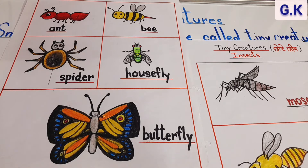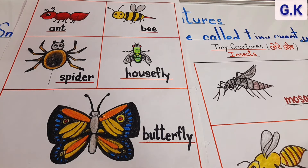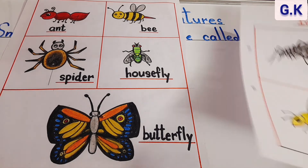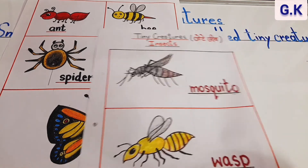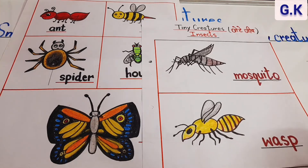Now which insect is this? It's a butterfly — B-U-T-T-E-R-F-L-Y. Butterfly is an insect with a pair of beautiful wings. इसके दो beautiful wings होते हैं।